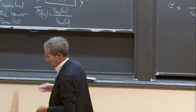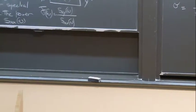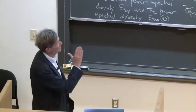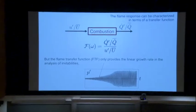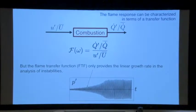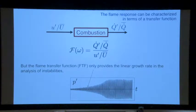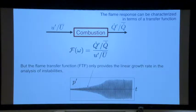Let me now go on. What we are going to do now is introduce this concept of describing function. What we've done up to now is to use transfer functions — very much like what we do in controls. But this is good in the linear regime, when you have small perturbations. However, in combustion, when you have combustion instabilities, the perturbations may reach high levels — you may have a large level of oscillation.